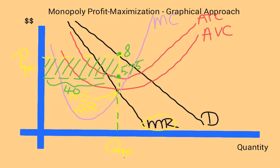In the long run for this monopolist, it's very possible that this firm can continue to make these profits because there are high barriers to entry.